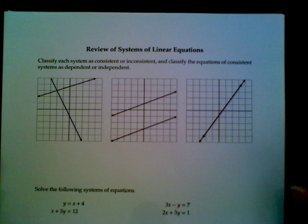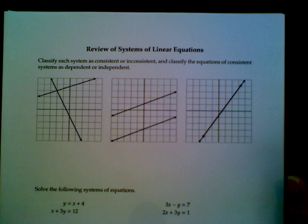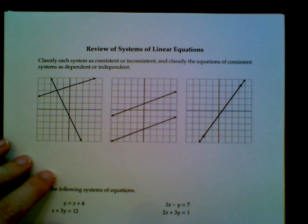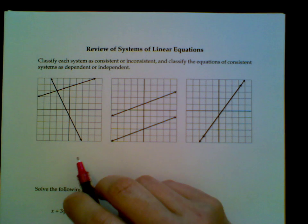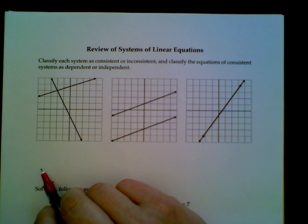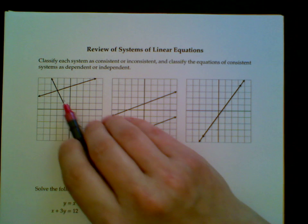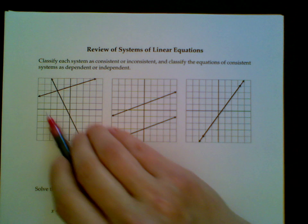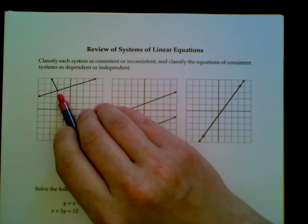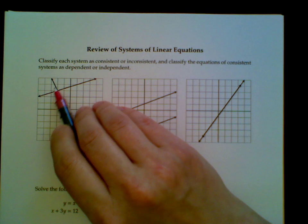You know that a consistent system is one that has a solution, and since the solution to a system is a solution to each equation, and a solution to an equation corresponds to a point on the line, it means there's a point on every graph. In this first system, this point right here is on both graphs.